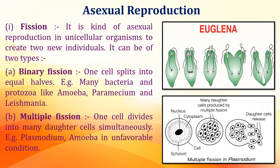Today we will study asexual reproduction in detail. Let's start with the topic of fission — the process through which organisms reproduce and produce new offspring. Fission is a kind of asexual reproduction in unicellular organisms to create two new individuals.